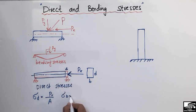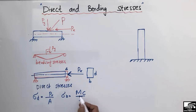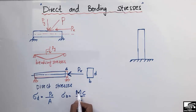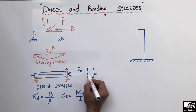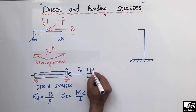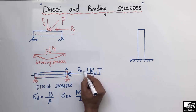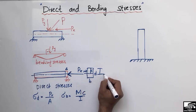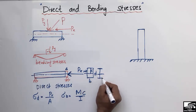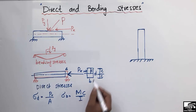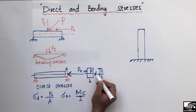Bending stress can be found using the formula: sigma_b = Mc/I, where M is the bending moment at the point where you want to find the bending stress. C is the distance from the neutral axis of the beam to the top (or bottom) of the beam, and I is the moment of inertia, calculated according to the geometry of the cross-section.